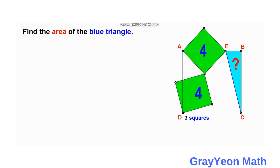Next, we consider drawing a line from the intersection of the two small squares — the green square — to point D, and we label the intersection point as F. This forms triangle AFD. We now focus on this triangle AFD. Segment DF is actually the hypotenuse of an isosceles right triangle formed from the smaller square, so DF equals square root of 2 times square root of 2.